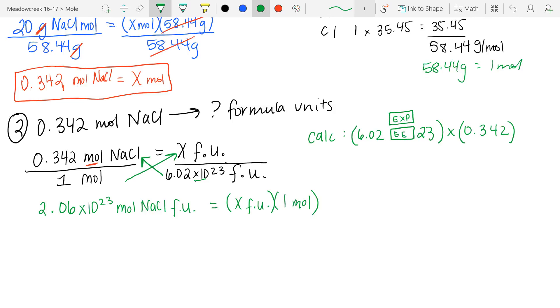I have x number of formula units times my 1 mol. In order to get x by itself, I need to divide by my 1 mol here. By doing so, I notice that 1 mol and 1 mol cancel out. My moles cancel out. And my x number of formula units is equal to 2.06 times 10 to the 23rd formula units of NaCl.